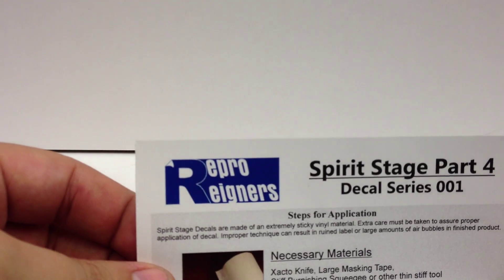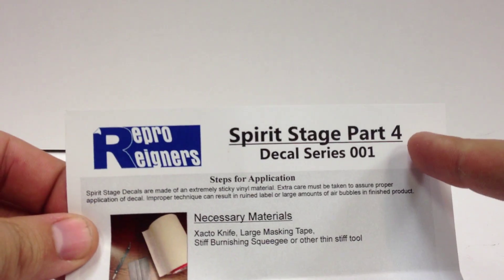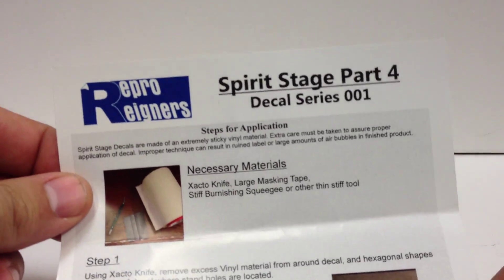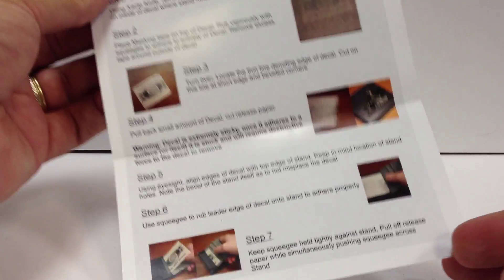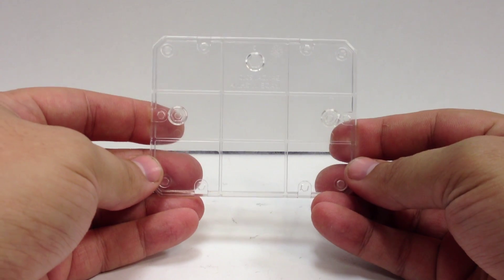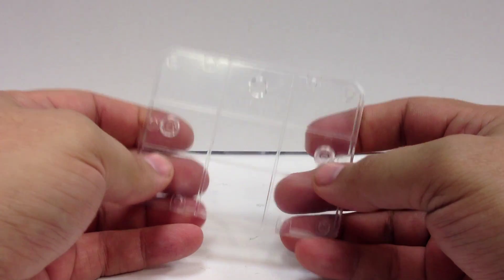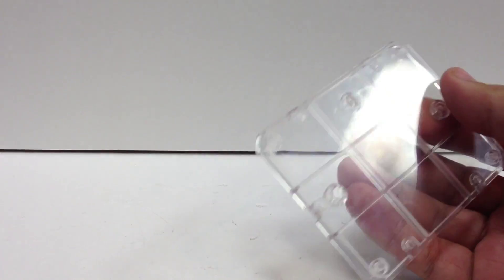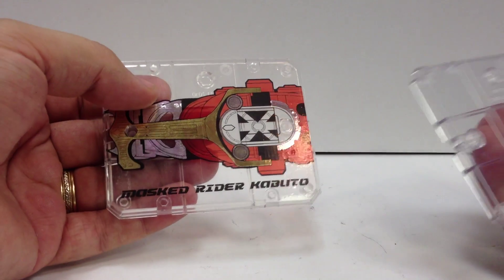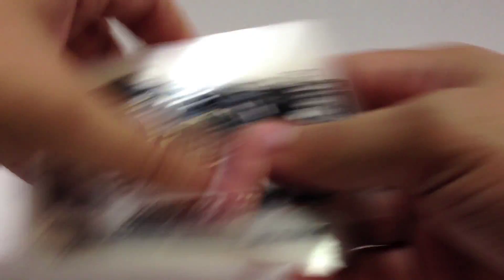Tonight we're looking at some new stuff from a company called Repro Rainers Spirit Stage Part 4 Decal Series 01. This is the instruction sheet on how to do it. It's actually pretty simple. Basically it lets you take one of your little stands here for your SHFs or anything else you're using them for and take it from this into something like this, with the Kamen Rider Kabuto logo and color.